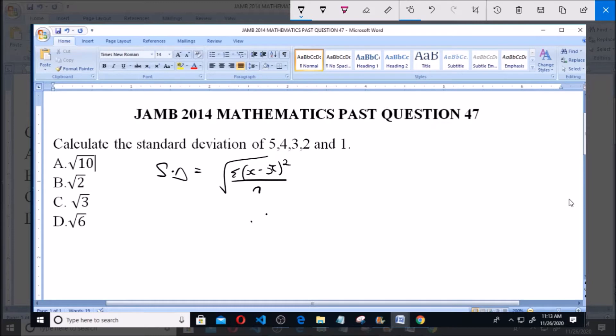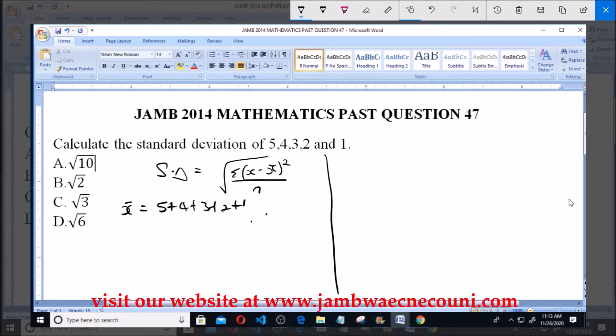Now we have the given numbers 5, 4, 3, 2, and 1. Now let's find the mean. The mean is equal to 5 plus 4 plus 3 plus 2 plus 1 all over the total number, which is 5.